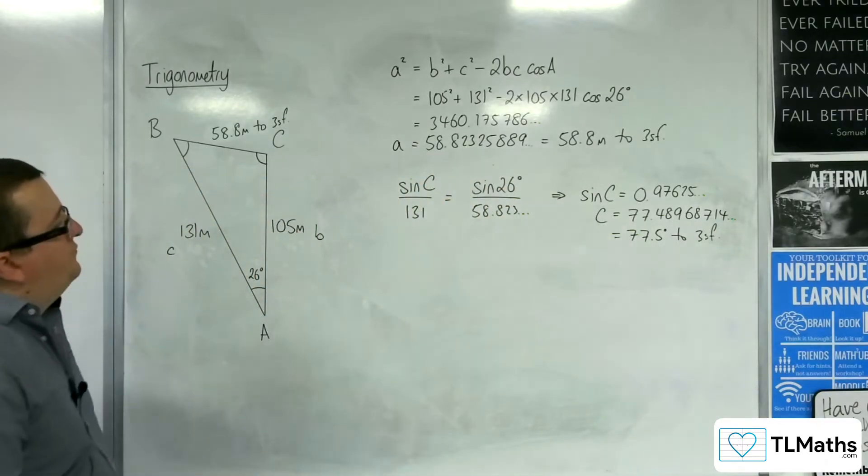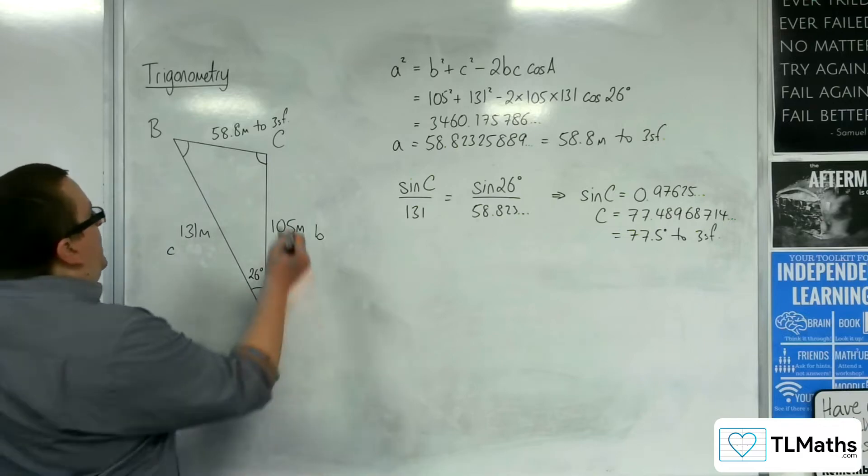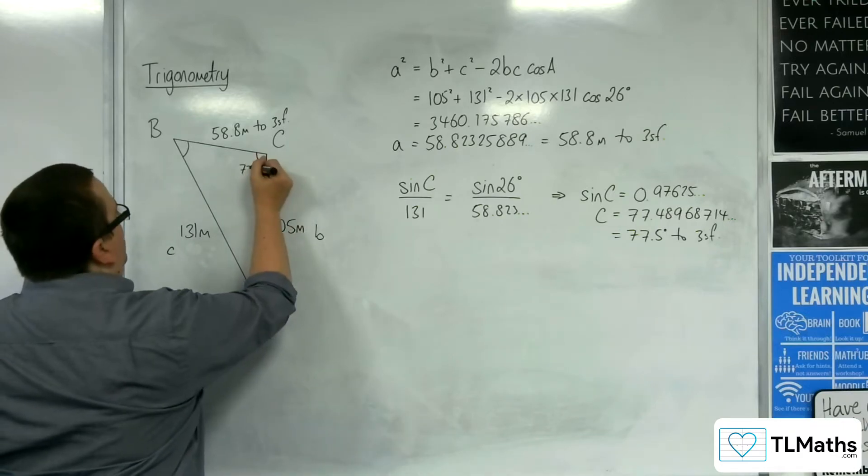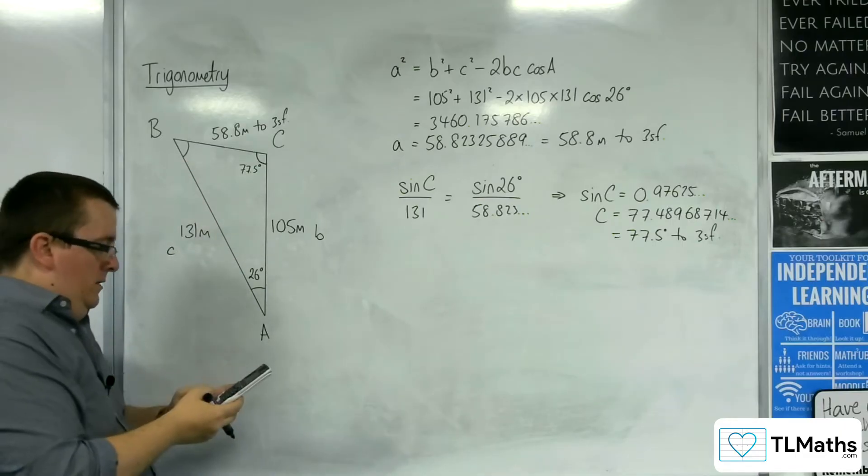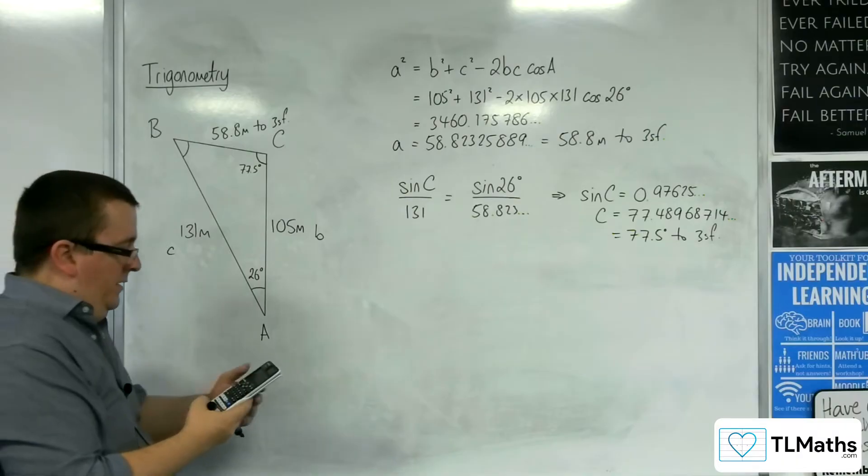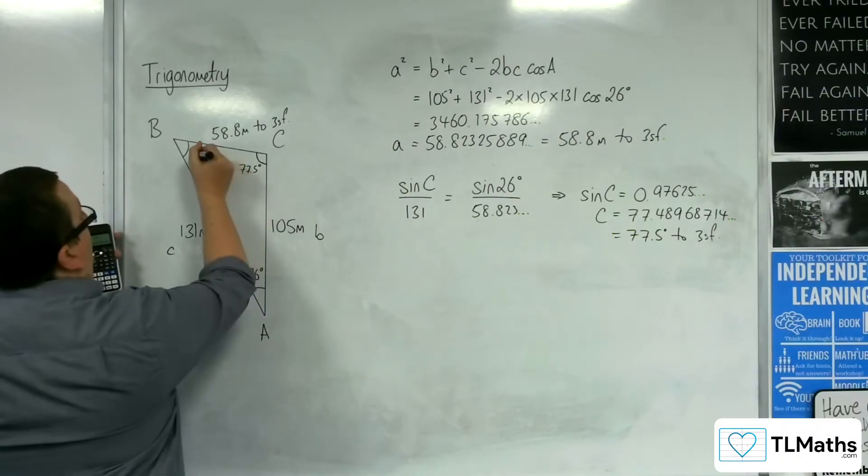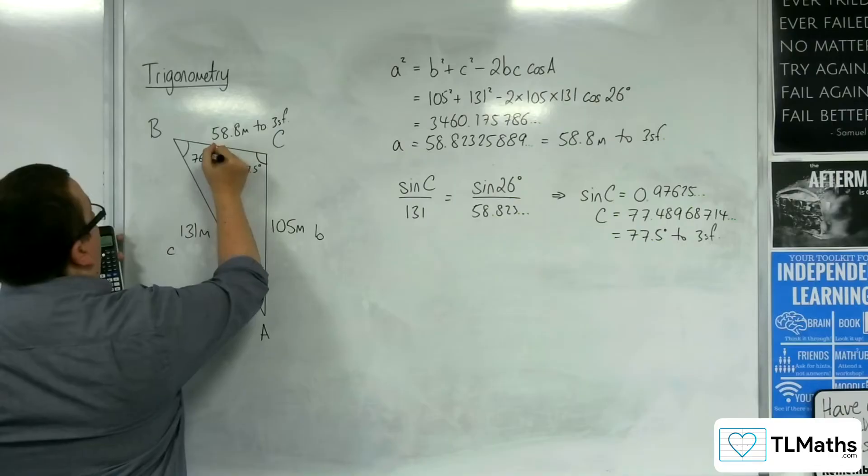So I'd be saying that that's 77.5. And so, I could do 180, take away that angle, take away the 26, gets me 76.5 to 3 sig fig for that angle there.